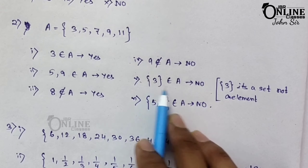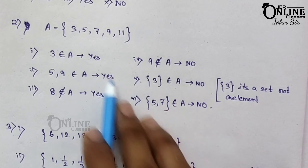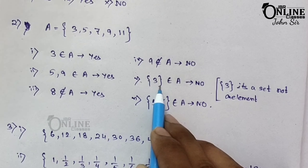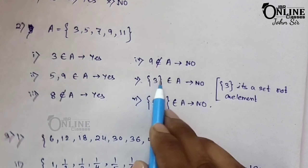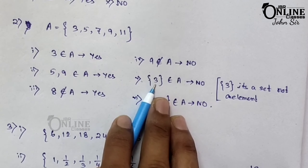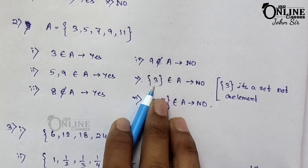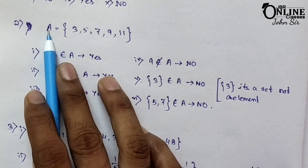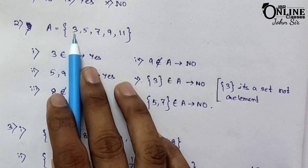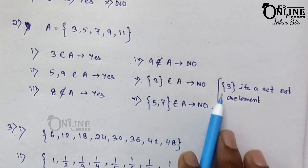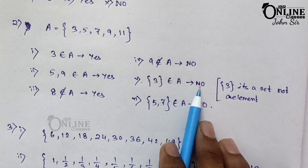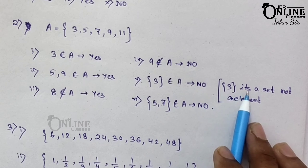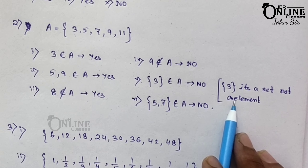Number 5: {3} is an element of A. Here, 3 is an element, but {3} in curly brackets means it's a set. A set cannot belong to A as an element in the same way. An element and a set are not the same thing. So the answer is no — it's a false statement. Remember that.